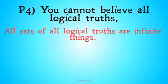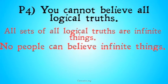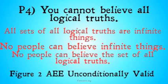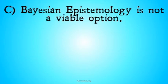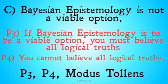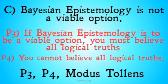Therefore, Premise 4: you cannot believe all logical truths. All sets of all logical truths are infinite things; no people can believe infinite things; therefore, no people can believe the set of all logical truths. That's going to be figure AEE — unconditionally valid. Check out 100 Days of Logic if you don't know what that means. And our conclusion follows: Bayesian epistemology is not a viable option — from premises 3 and 4, modus tollens, which means it is a valid argument. I haven't seen any versions of Bayesian epistemology that don't hold premises 1, 2, and 3.